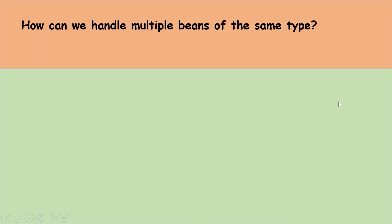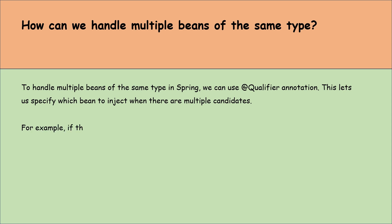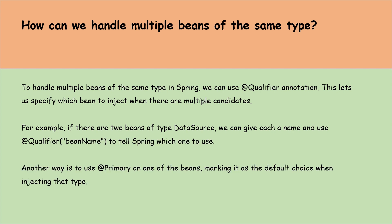How can we handle multiple beans of the same type? To handle multiple beans of the same type in Spring, we can use the @Qualifier annotation, which lets us specify which bean to inject when there are multiple candidates. For example, if there are two beans of type DataSource, we can give each a name and use @Qualifier to tell Spring which one to use. Another way is to use the @Primary annotation on one of the beans, marking it as the default choice when injecting that type.